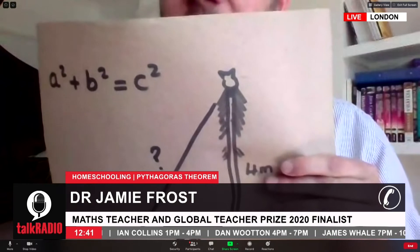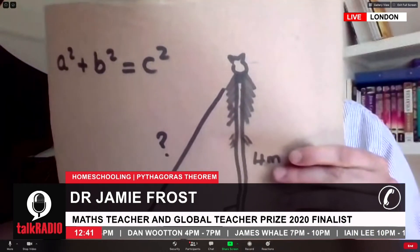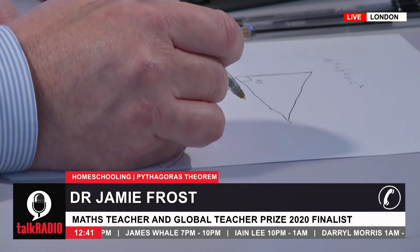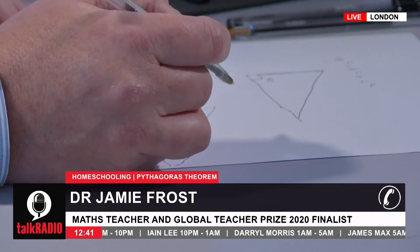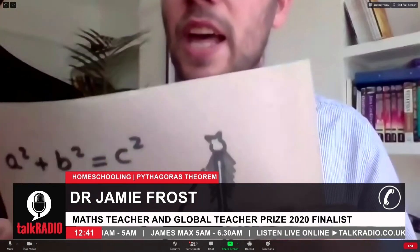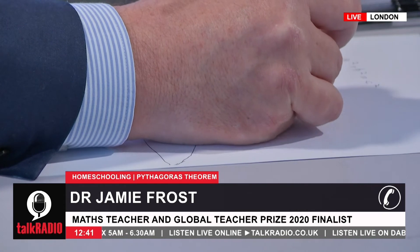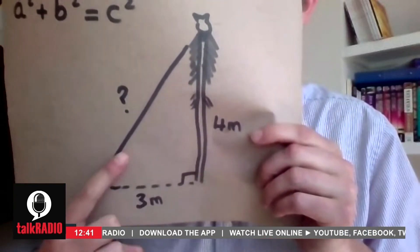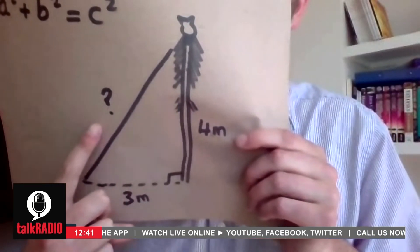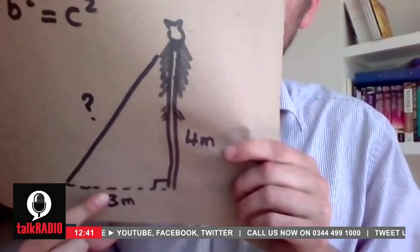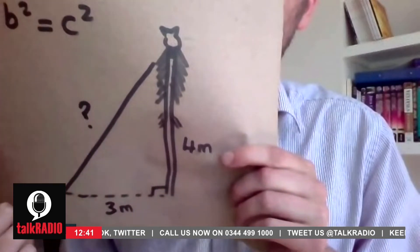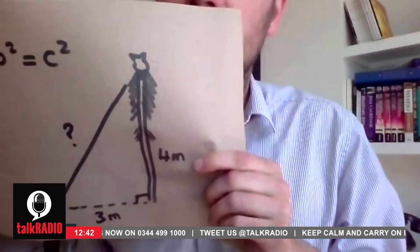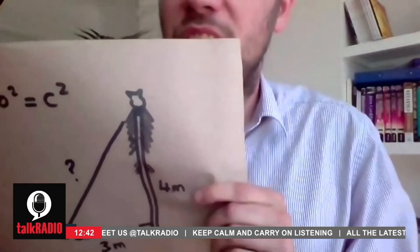The longest side is always opposite the right angle — that's an easy way to identify it. So the hypotenuse, the longest side opposite the right angle, is c. The shorter sides a and b are 3 and 4. So plugging into the formula: a is 3, b is 4. Three squared is 9, four squared is 16, so that's 9 plus 16. Nine plus 16 equals 25.